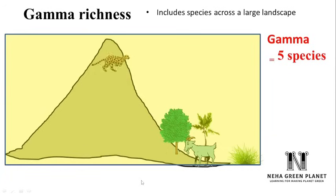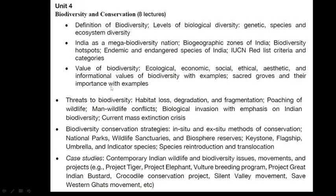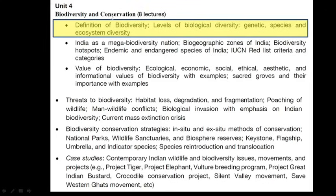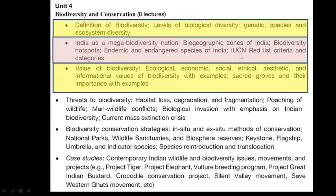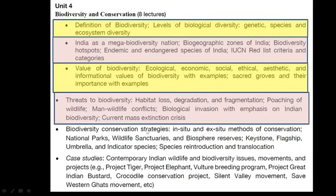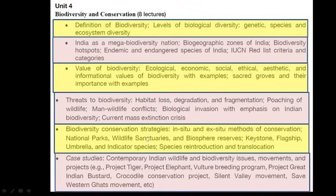These are the ways by which we can calculate regional biodiversity. To conclude, we have completed the definition of biodiversity, genetic, species, and ecosystem level biodiversity, why India is a mega biodiverse nation, the 10 biogeographical zones, the four hotspots, endemic and endangered species, and the value of biodiversity. In the next video we will be discussing IUCN, threats to biodiversity, biodiversity conservation strategies, and different case studies.